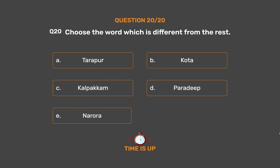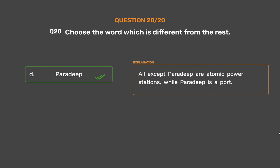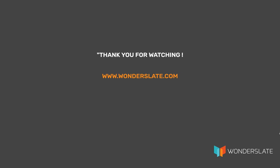The correct answer is Option D: Paradeep. All except Paradeep are atomic power stations, while Paradeep is a port.